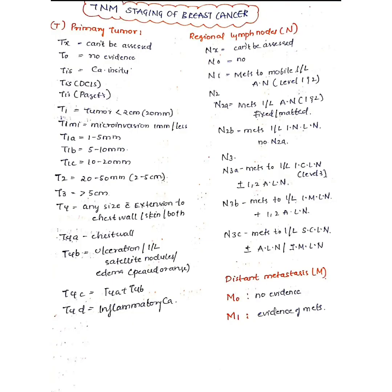In this video, let us quickly learn about TNM staging of breast cancer. T is the primary tumor, N is the regional lymph node involvement, and M is the distant metastasis.